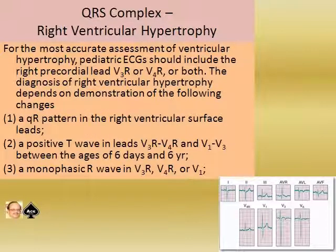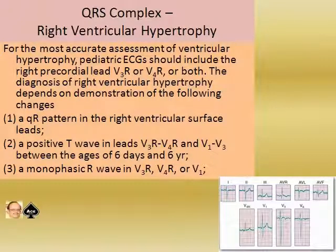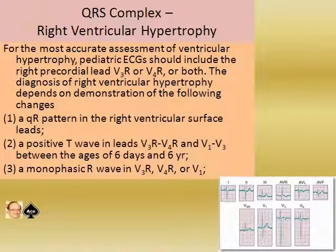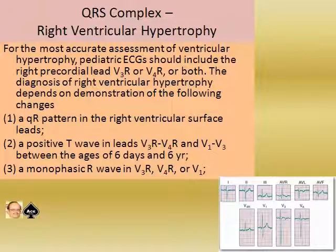Now something about the QRS complex and right ventricular hypertrophy. For the most accurate assessment of ventricular hypertrophy, a pediatric ECG should include the right precordial leads, mainly V3R and V4R. Diagnosis of right ventricular hypertrophy depends on the following changes: one, a QR pattern in the right ventricular surface lead; two, a positive T wave in leads V3R, V4R, V1, V2, and V3 between the age of six days and six years.